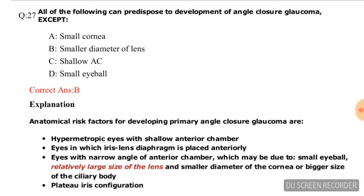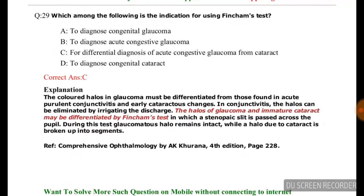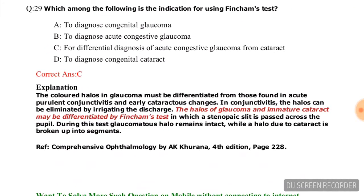Question number twenty-six: All of the following can predispose to development of angle closure glaucoma except — options are small cornea, smaller diameter of lens, shallow anterior chamber, and small eyeball. The correct answer is option B, smaller diameter of lens.